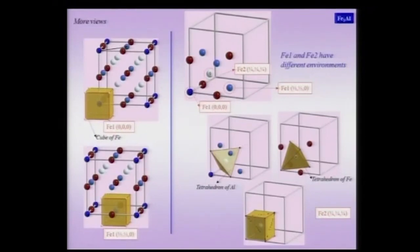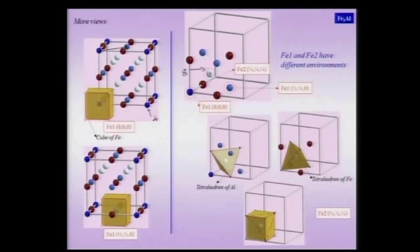There are 4 iron-1 atoms (4A Wyckoff position) and 8 iron-2 atoms (8C Wyckoff position). Iron-1 contributes 4 atoms to the unit cell and iron-2 contributes 8 — clearly non-equivalent positions with different coordination polyhedra and different numbers of equivalent atoms within the unit cell.